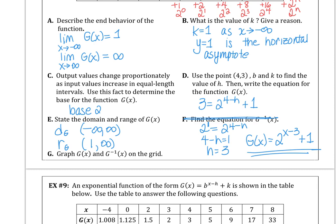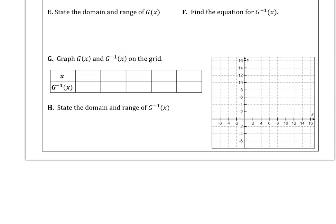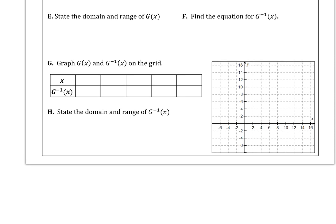So we can graph g and g inverse by taking the x values from the table: 2, 3, 5, 9, 17. You see where I got those. Those are y values on g. They're the x values on the inverse. And then the x values on g are the y values on the inverse.